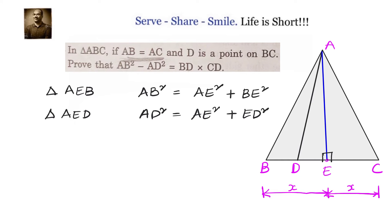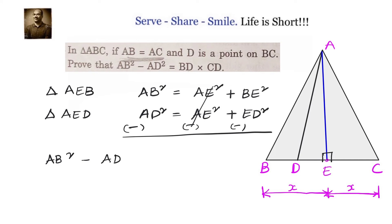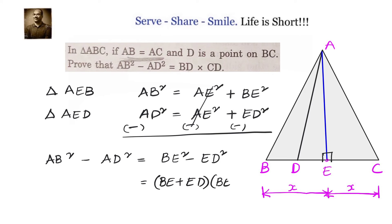What we need is AB squared minus AD squared, so we subtract one from the other. We can cancel AE squared and what is left is AB squared minus AD squared equals BE squared minus ED squared. Since this is in the form A squared minus B squared, we can write it as BE plus ED into BE minus ED.